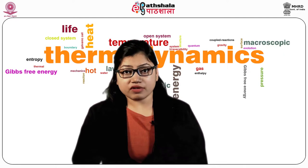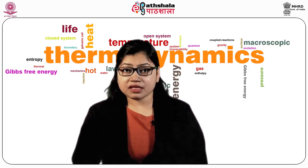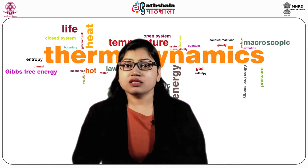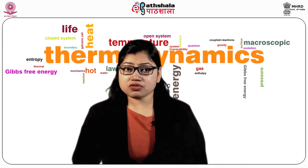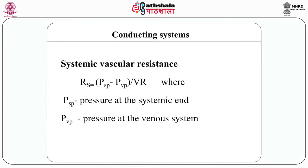With every beat, the ventricle pumps out blood. The left side of the ventricle pumps blood into the systemic circulation. The blood at the systemic end is already in a state of pressure, PSP. As the blood flows through the systemic circulation, it ends in a venous system. The pressure at the venous system is low, marked as PVP. The venous return is shown by VR. So the systemic vascular resistance can be expressed as RS = (PSP − PVP) / VR.